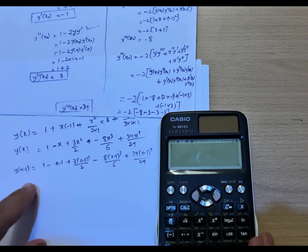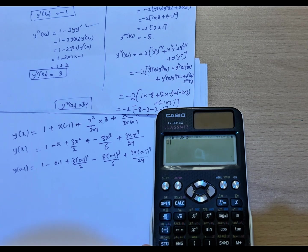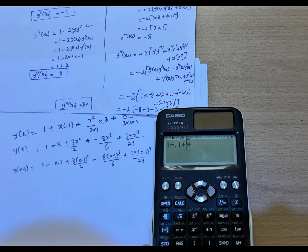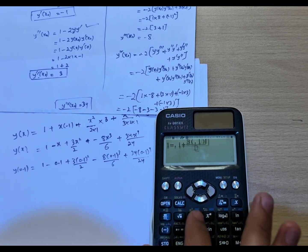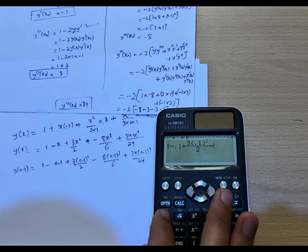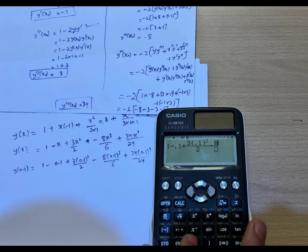Now I will calculate this. See here: 1 minus 0.1, plus, then this option, divide option, so 3 multiplied by 0.1 whole squared divided by 2, then minus, this is division mode again, 8 multiplied by 0.1 whole cubed, shift cube, divided by 6.